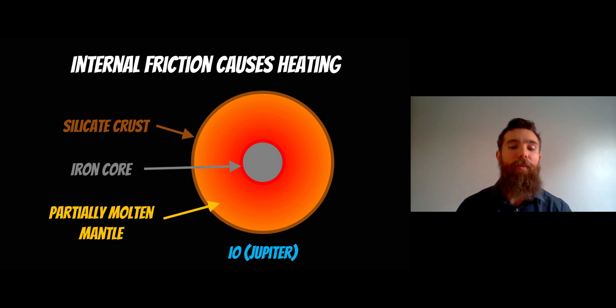It has a partially molten mantle and an iron core, but a lot of that internal heat comes from this tidal flexing as it's on an elliptical orbit. Some of it comes from other tidal processes, but some is due to this internal friction from its orbit, which heats it up.